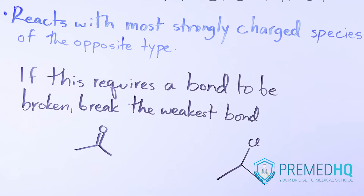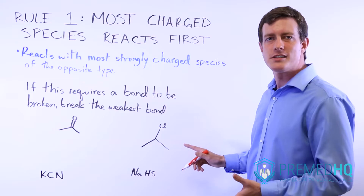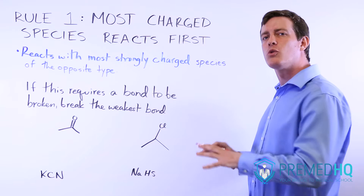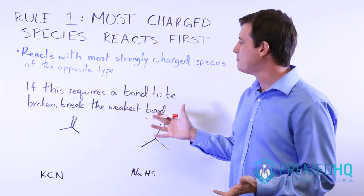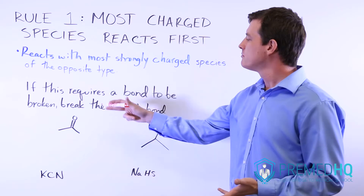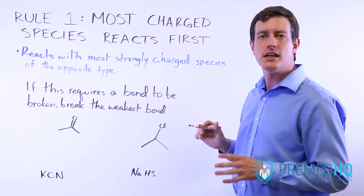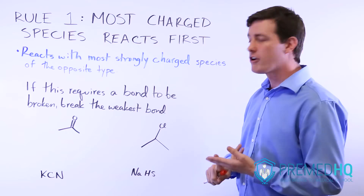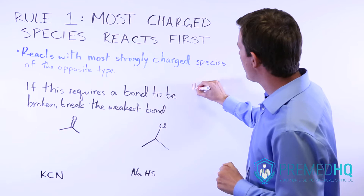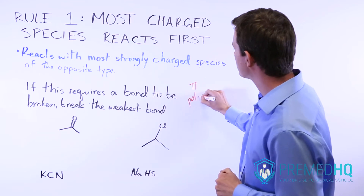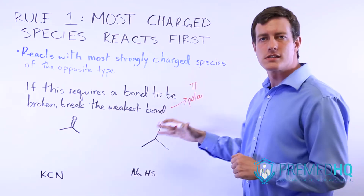When this reaction happens, a lot of times it will cause a new bond to be formed, and that will require some bond to be broken. If this does require a bond to be broken, you have to break the weakest bond. The weakest bonds tend to be either pi bonds or very polar bonds — those are the two you should look for.